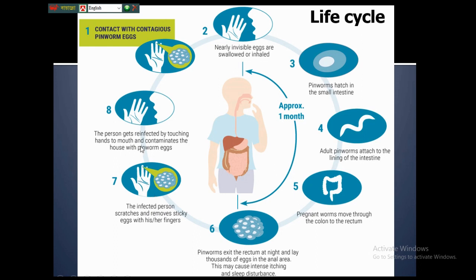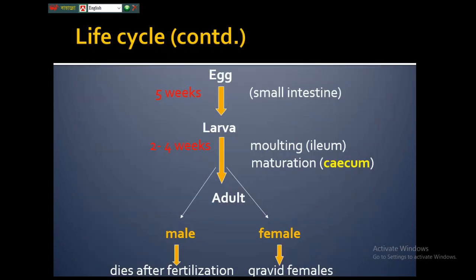When the infected person touches their mouth or contaminates household items, this becomes the mode of transmission. This can cause auto-infection because the infected person reinfects themselves — a habit especially common in children. Children can also touch utensils or household items, and if those are shared with other family members, the infection spreads throughout the household.